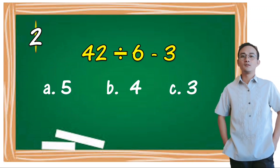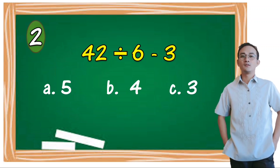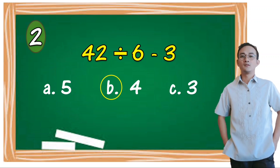42 divided by 6 minus 3. A) 5, B) 4, C) 3. The correct answer is letter B, 4.